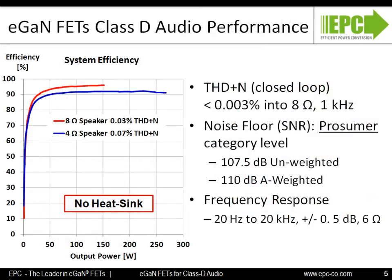Now let's look at the performance. The EPC-9106 reference design has demonstrated 96% efficiency at 150-watt 8-ohm, and 92% efficiency at 250-watt 4-ohm. All elements that can impact the sonic performance of Class-D audio systems are minimized or eliminated in an eGANFET-based system. The audio performance of this board puts it in the prosumer category.